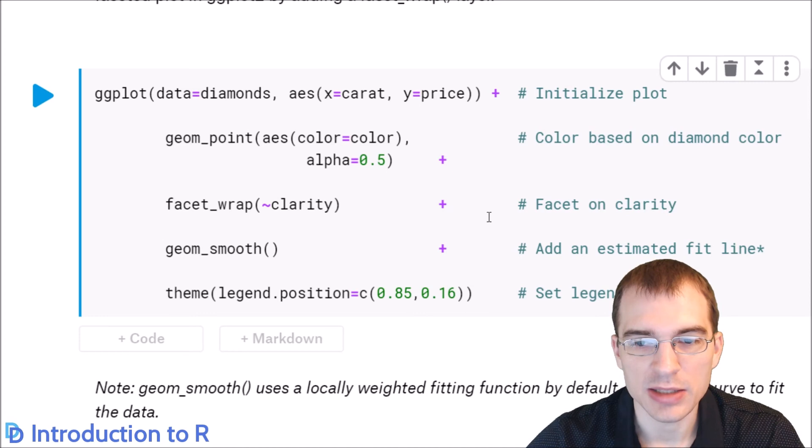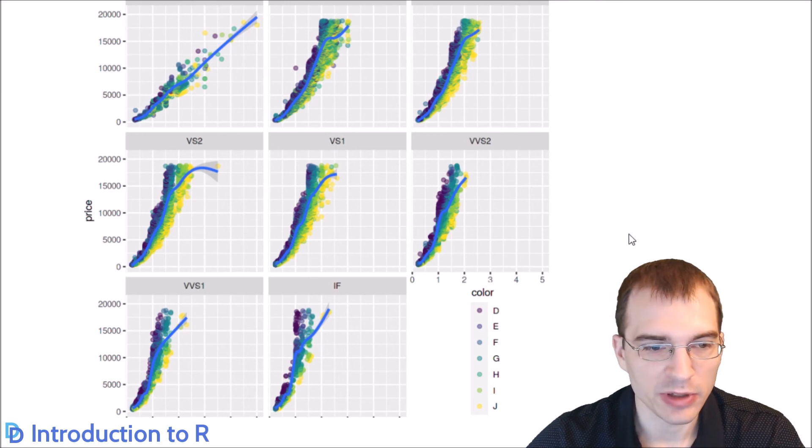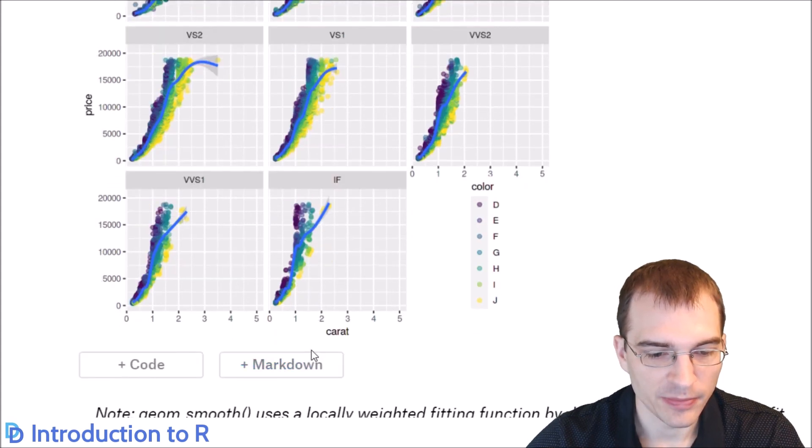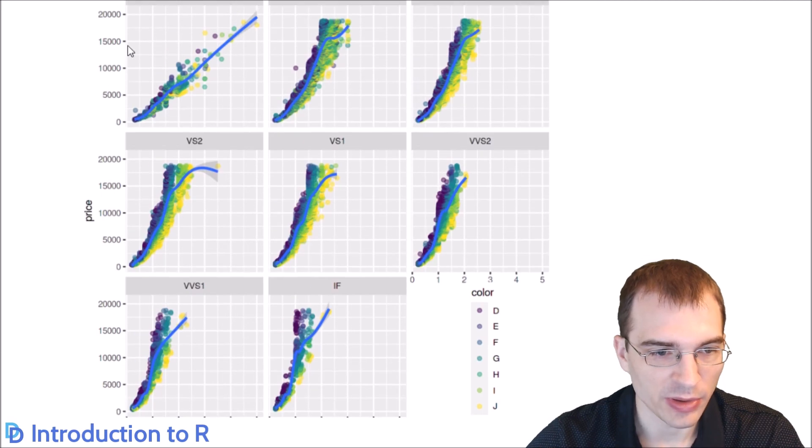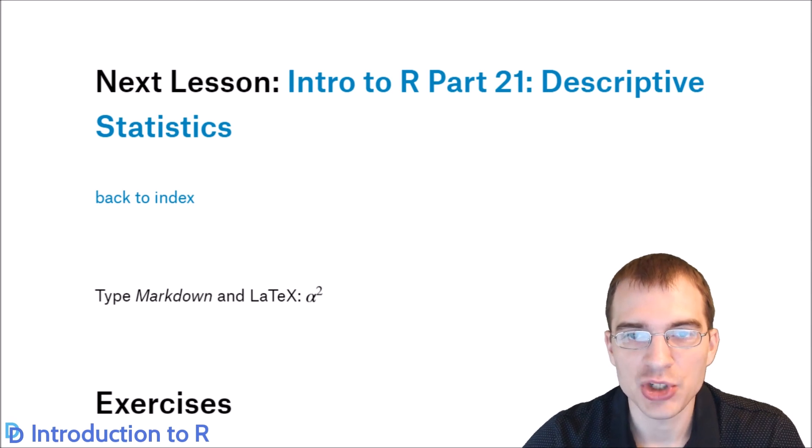When we run this, we should see one plot, a scatter plot, for each of the different clarity levels. As you can see, we have one plot for each of the different clarities. These are the very flawed diamonds. You can see they have kind of a more linear relationship between price and weight. Then as the quality level is going up, the trend is getting much steeper. With the internally flawless diamonds, they don't have to be very large before the price is getting up into the 15,000 range. Whereas with very flawed diamonds, the diamonds have to be quite large, like three carats almost, for the price to be that high. Now that we know how to do plotting in both base R and ggplot2, we're going to move on by learning how to do statistics in R. We'll start by learning descriptive statistics. See you next time.